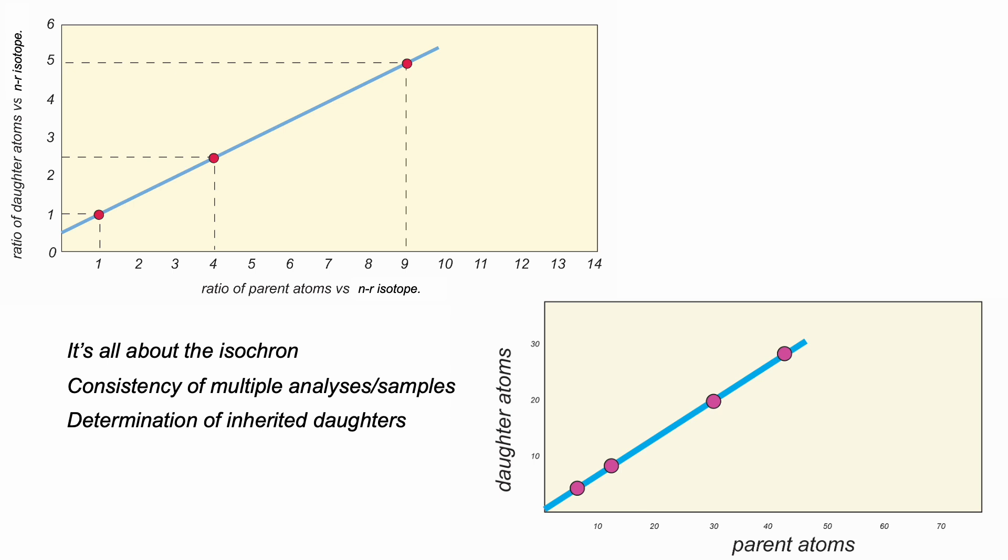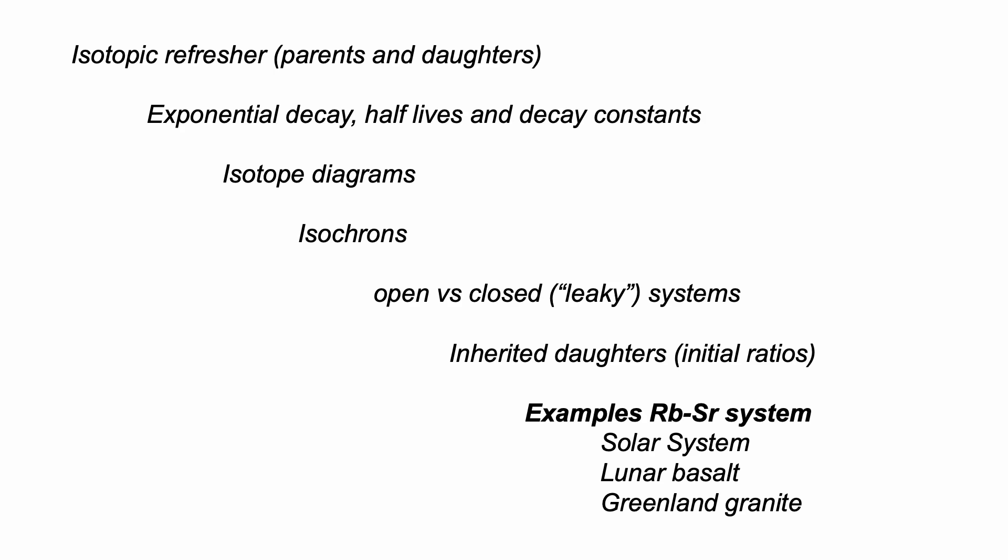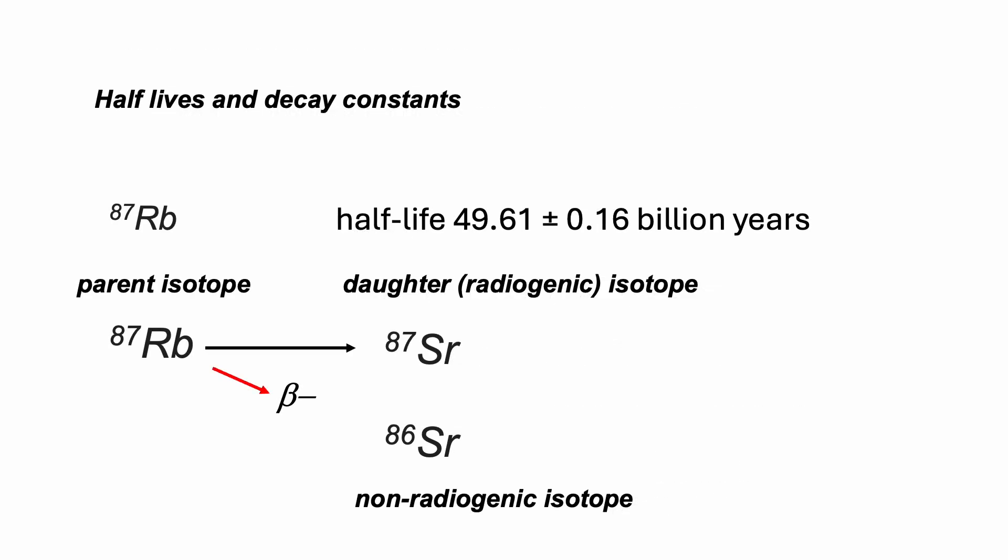Isochrons then. These are the key. The more data points, the more analyses, the more robust the result. So it's time to look at real examples using the rubidium-strontium system.